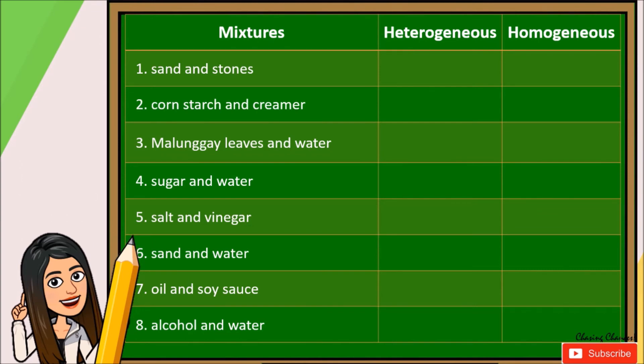This time, review and finalize your observations. Let's begin. Sand and stones, cornstarch and creamer, malunggay leaves and water, sugar and water, salt and vinegar, sand and water, oil and soy sauce, alcohol and water.